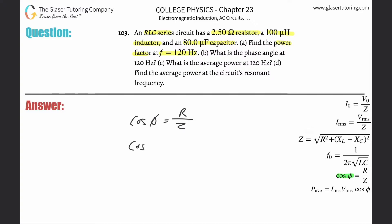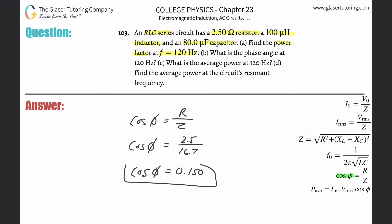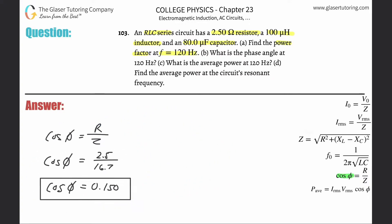So the power factor equals the resistance of 2.5 ohms divided by the impedance, which we calculated before as 16.7. We're just doing the division here: 2.5 divided by 16.7 — rounding slightly — works out to about 0.150. That takes care of part (a).